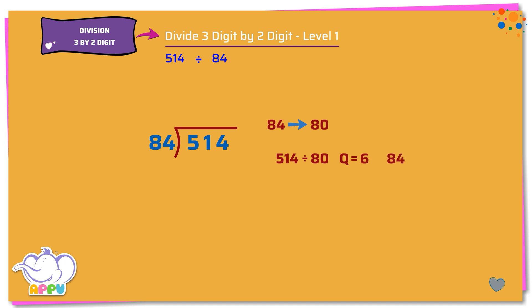We multiply 84 times 6, which equals 504, which is just less than 514. So it takes 6 84's.